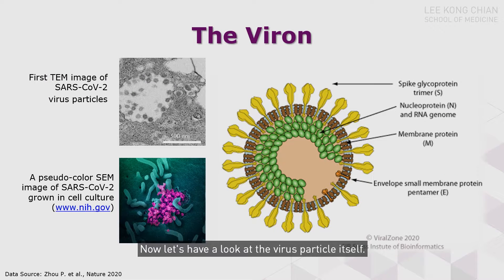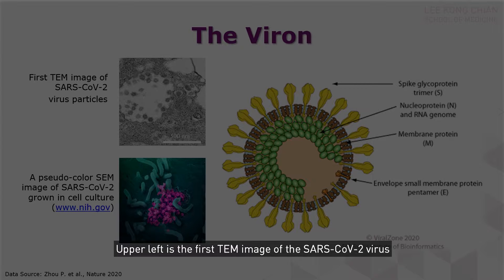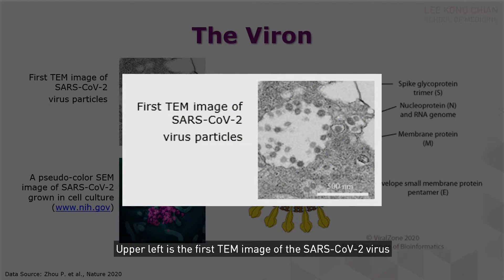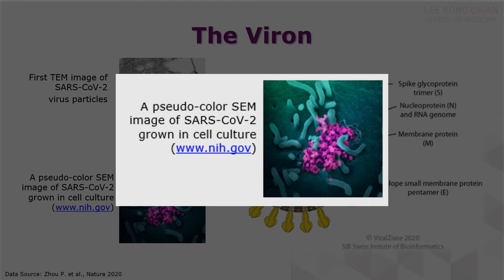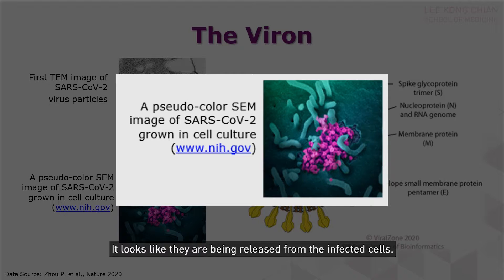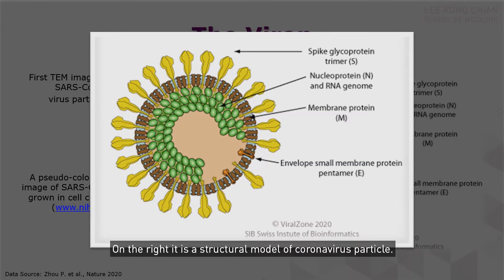Now let's have a look at the virus particle itself. Upper left is the first TEM image of the SARS-CoV-2 virus particle, isolated and subcultured from a COVID-19 patient. Lower left is a pseudo-colored SEM microscopic image of SARS-CoV-2 virus particles grown in the cell. It looks like they are being released from the infected cells.